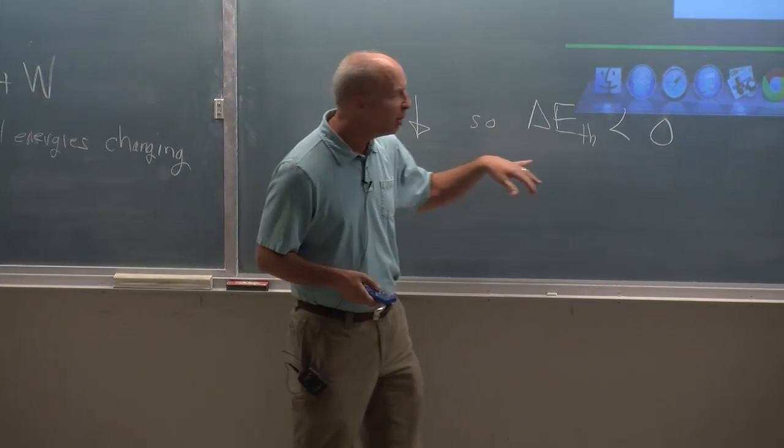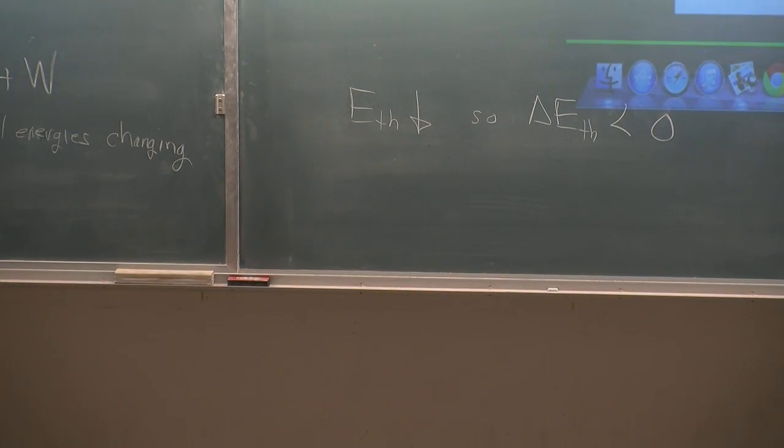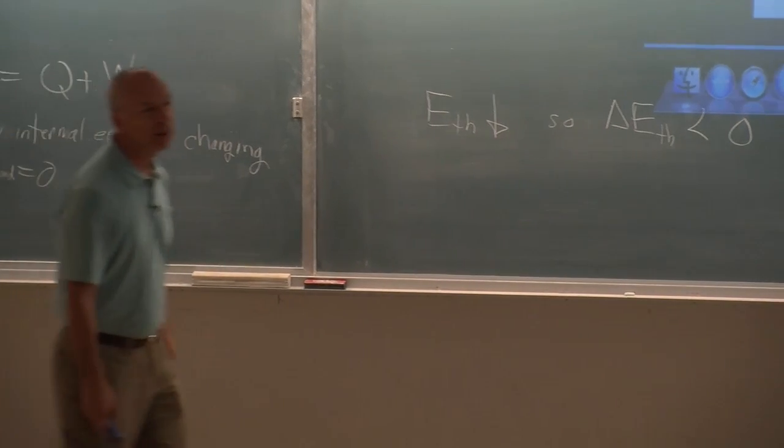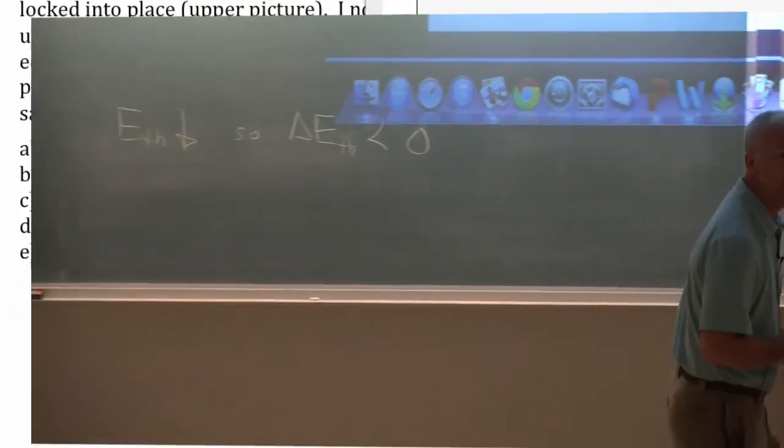But E thermal went down. So delta E thermal is a negative number. And if Q is zero, then W has to be a negative number. W has to be less than zero.